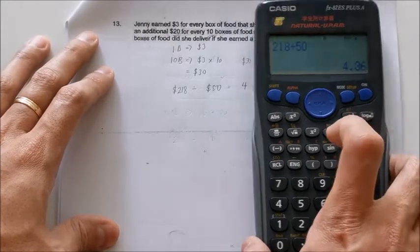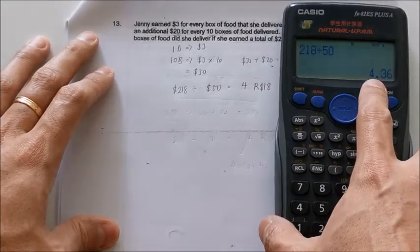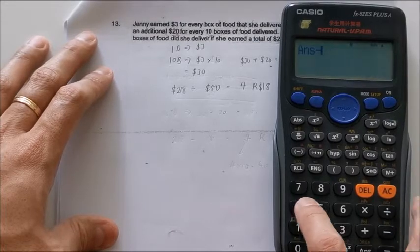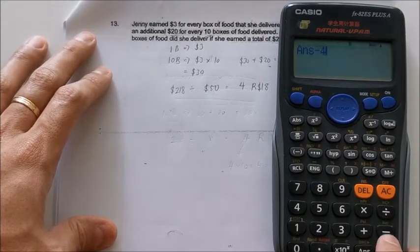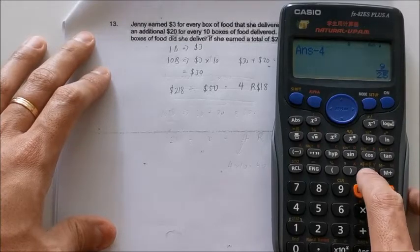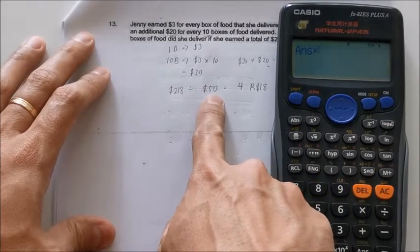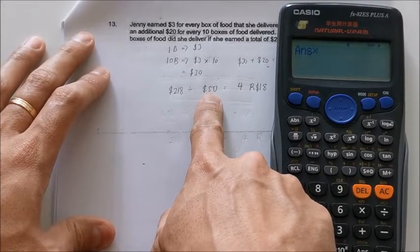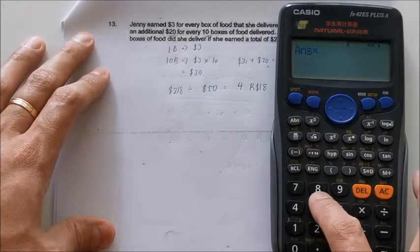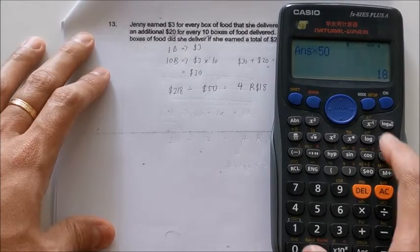So what I'll do is I will write down 4, which is the quotient. Now I will minus 4, minus away the whole number. I get 9 over 25, or 0.36. Then I multiply by the divisor, which is the $50. So I have a remainder of $18. Please take note of this.